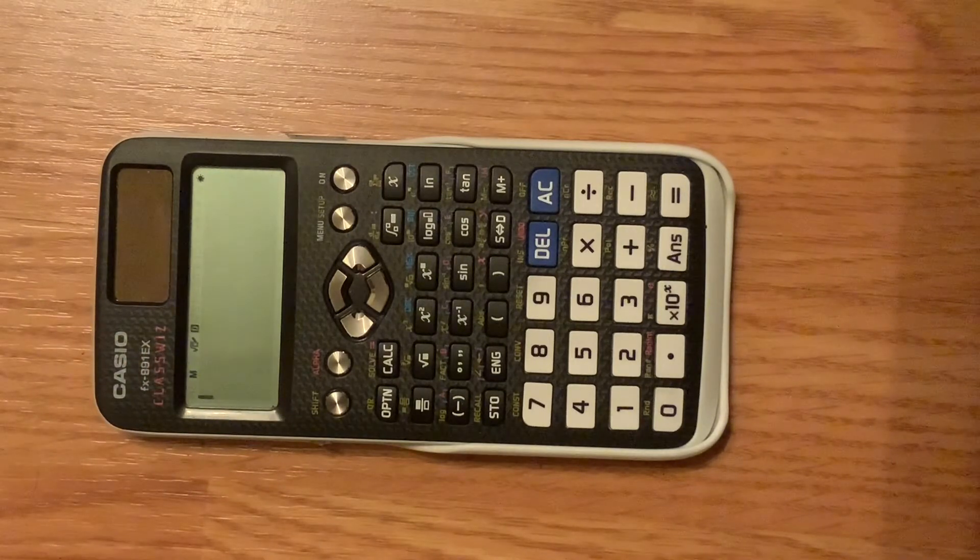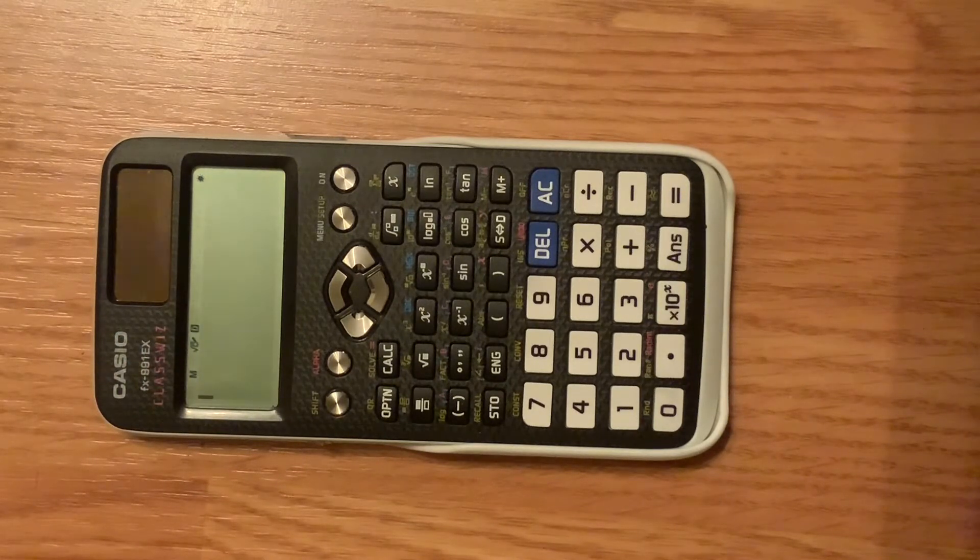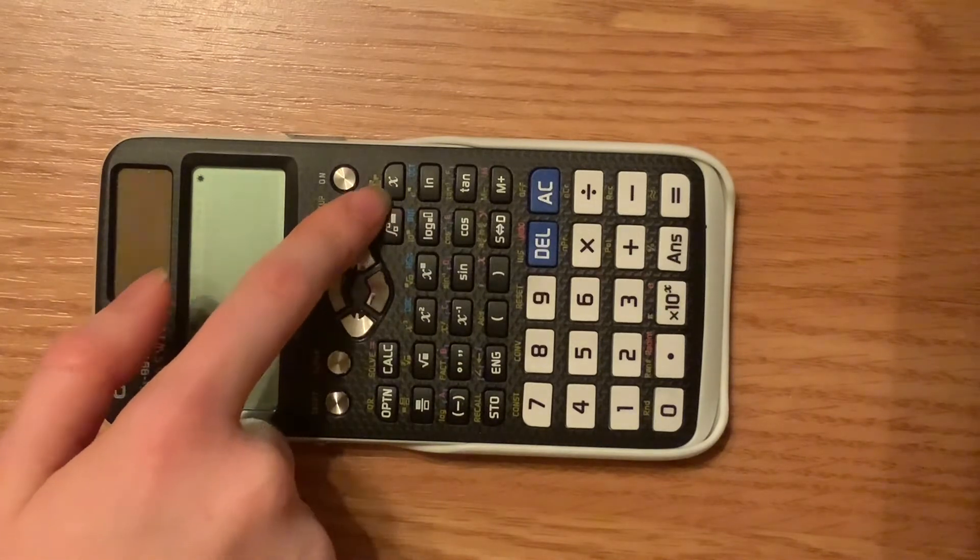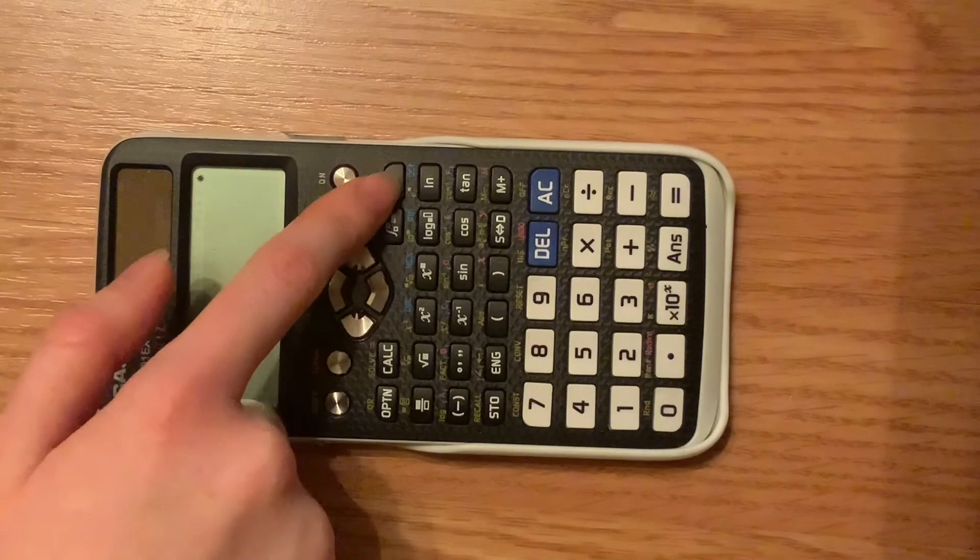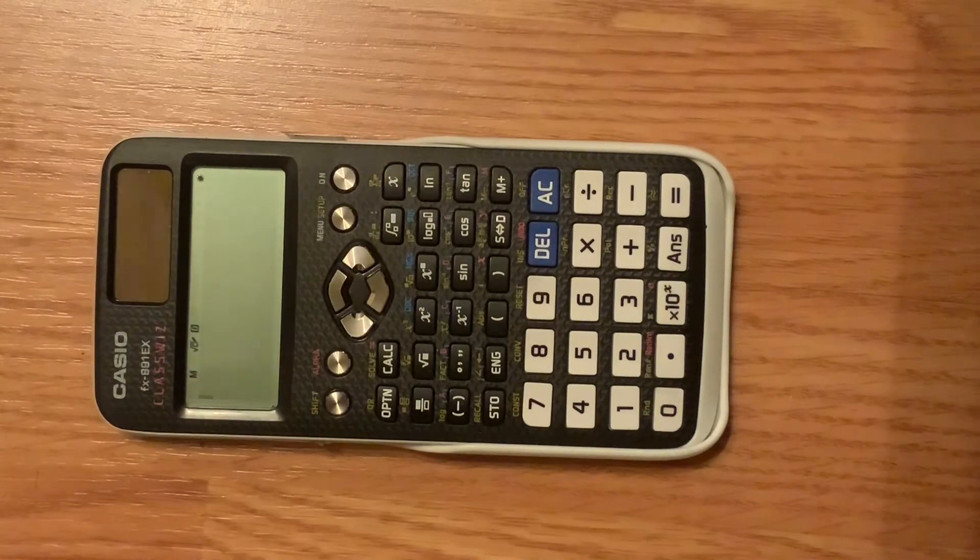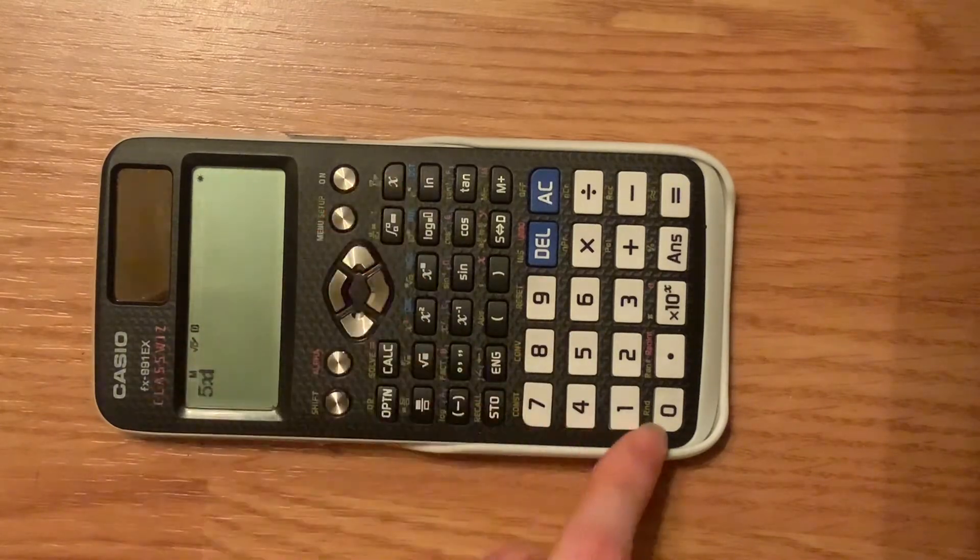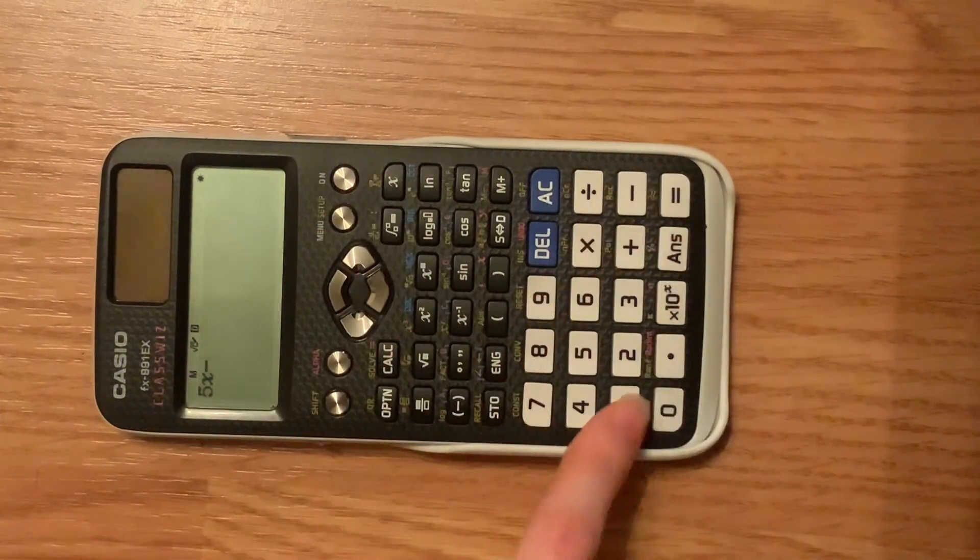So the first thing you're going to do is type in the first side of your equation. This button here can be used in place of x or whatever variable you have in your equation. So pretend the first part of my equation is 5x minus 10.